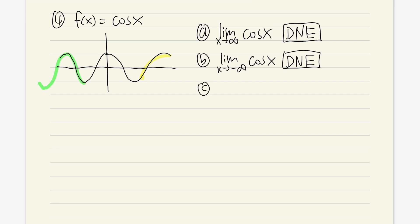Based on this, do we have any horizontal asymptote? No, because the y-value never approaches a specific y-value when x is going toward infinity or negative infinity.